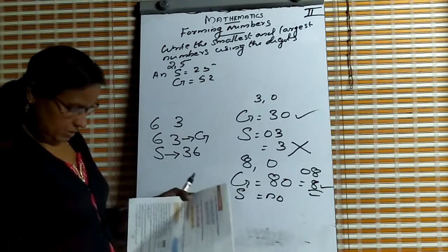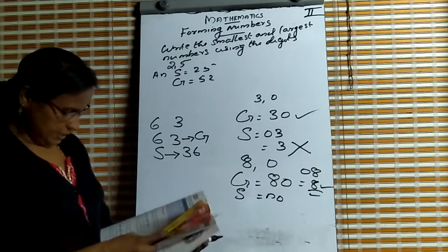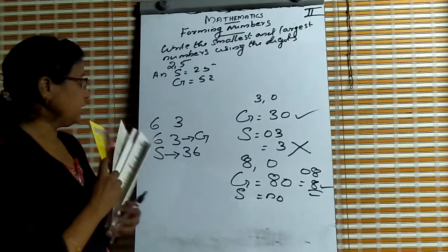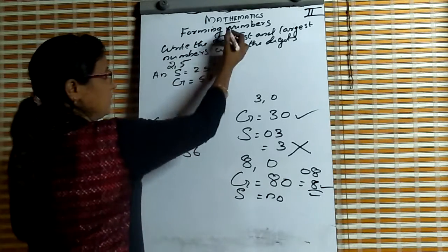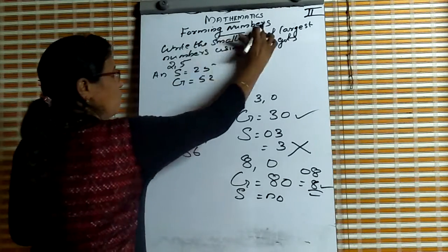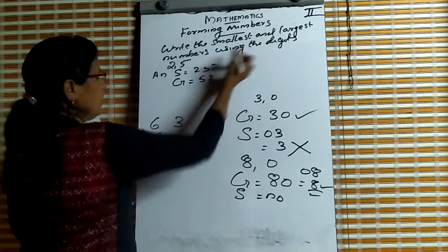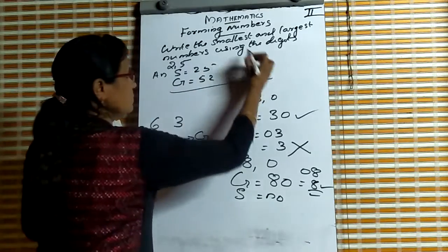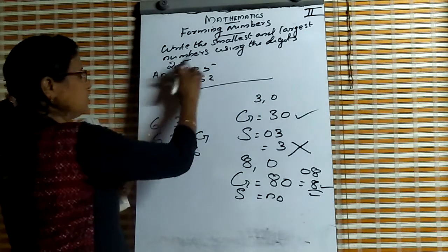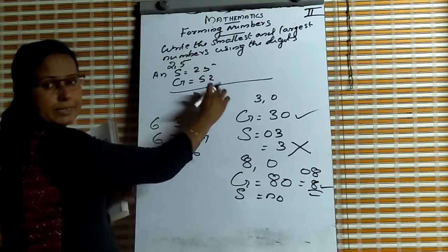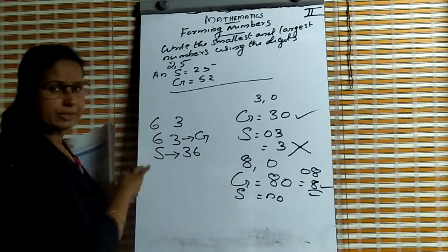Now, in your textbook, page number 159. Take your notebook and write the heading: forming numbers. Then write the smallest and largest numbers using the digits 2 and 5. Write the answer.